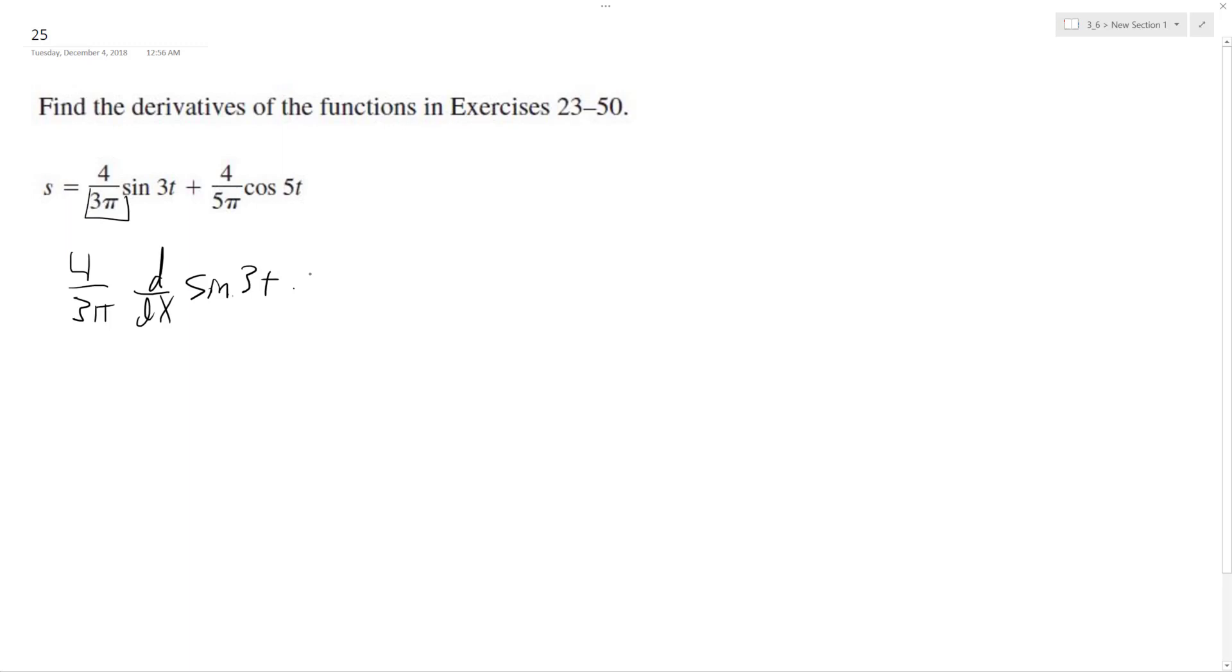So the derivative of what's on the inside will be 3t plus 4 over 5 pi times d dx, or d dt. I'm sorry, I need to get these right. I have the cosine of 5t and then d dt of 5t.